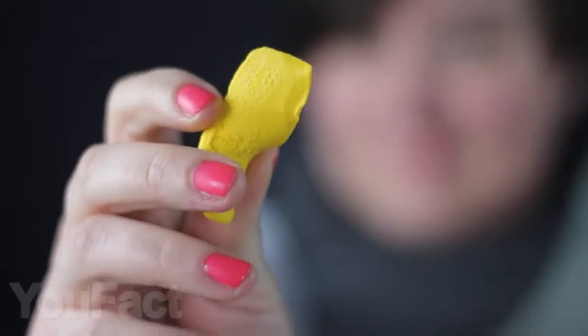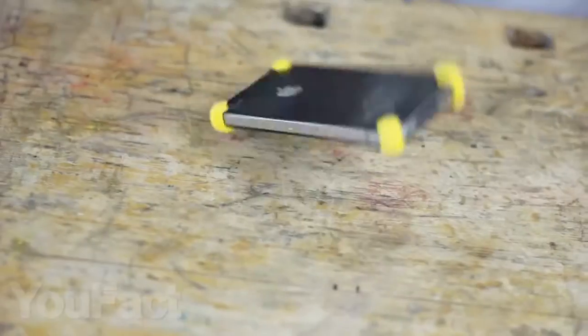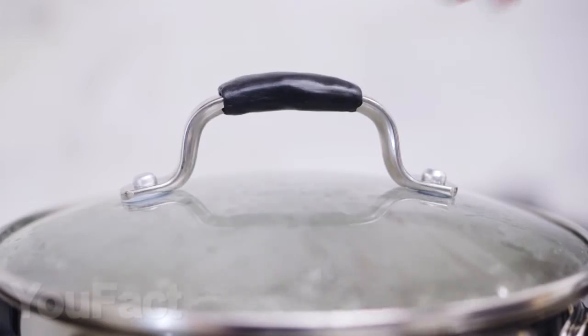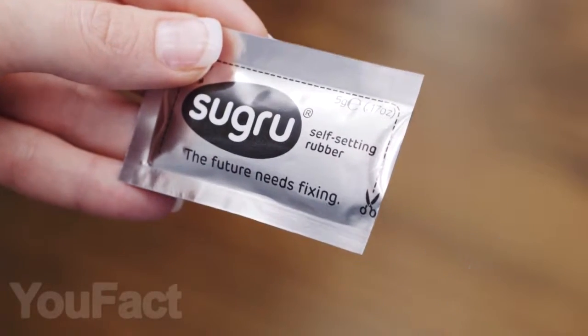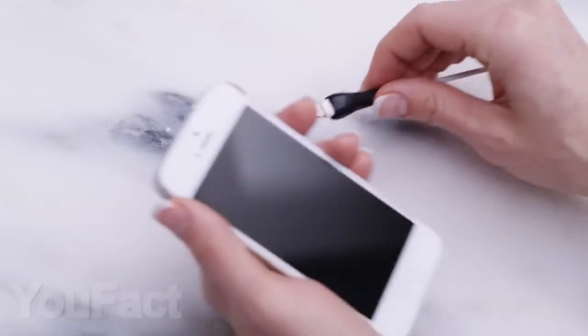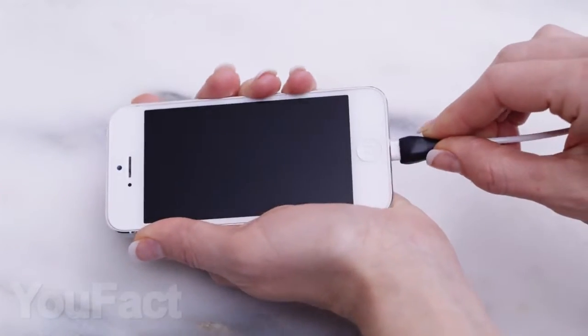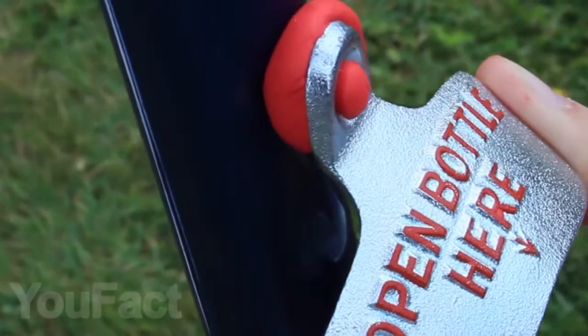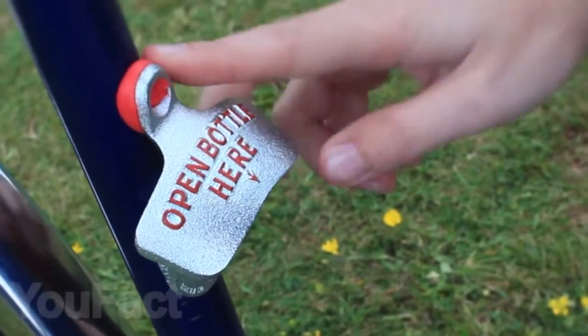This is Sugru. It is similar to plasticine, but much stronger, and you can fix things with it made of glass, ceramics, metal, plastic, and wood. After opening the package, you need to give it the desired shape within 30 minutes, and within 24 hours, it hardens and becomes very durable, waterproof, and even has electrical insulation up to 24 volts.